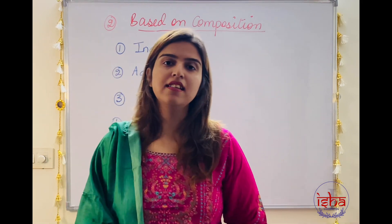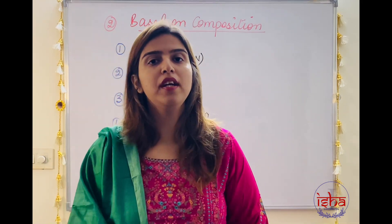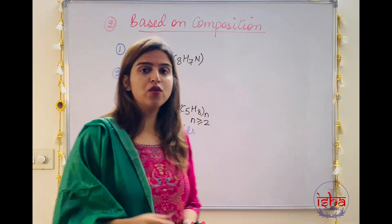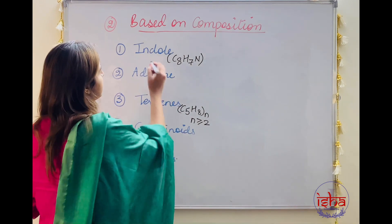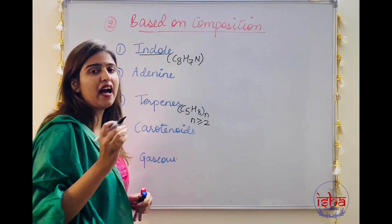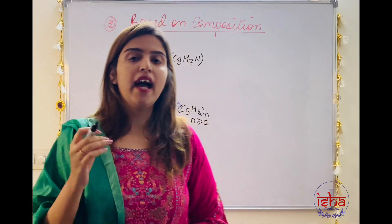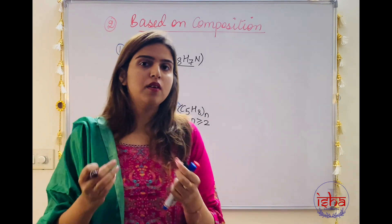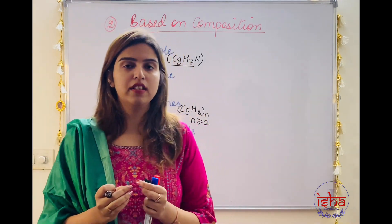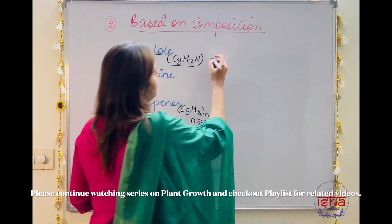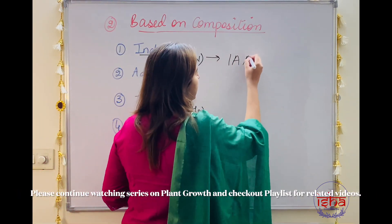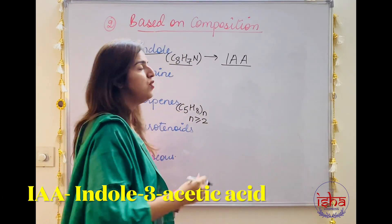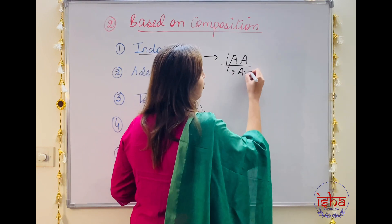Another way of classifying phytohormones is based on chemical composition — based on the compounds from which they are derived. Number one, they could be indole derivatives. Indole is an aromatic heterocyclic compound with the formula C8H7N. Phytohormones derived from this compound fall into this group. The most common example is IAA — indole-3-acetic acid — and the phytohormone that falls here is basically auxin.